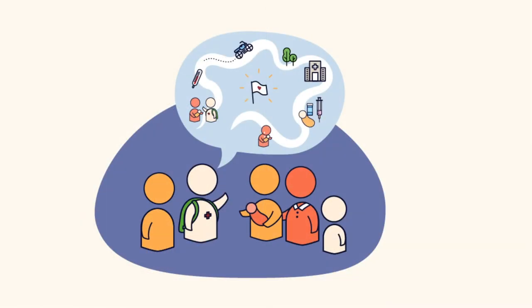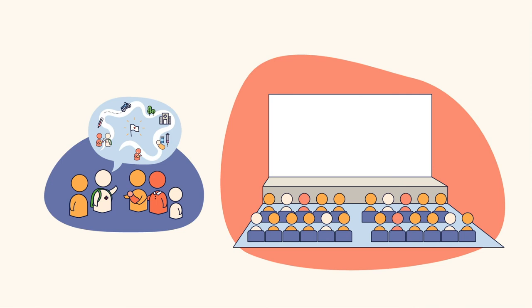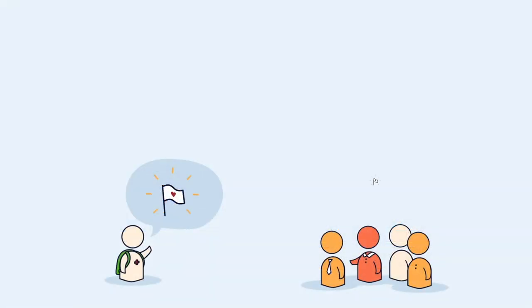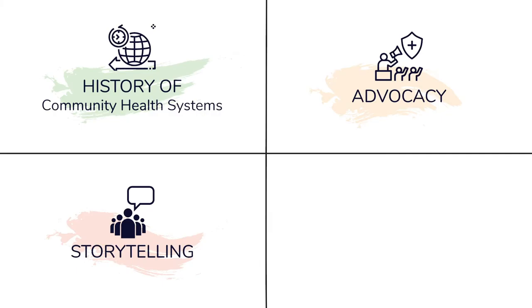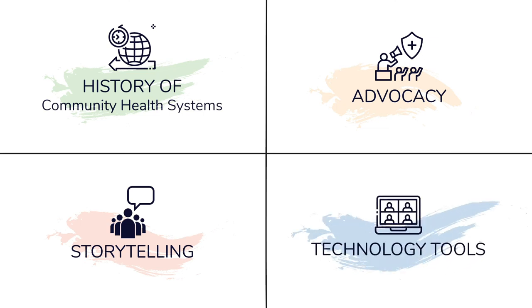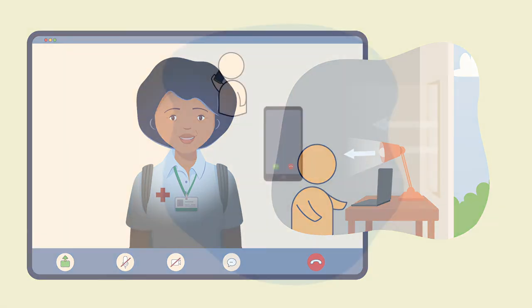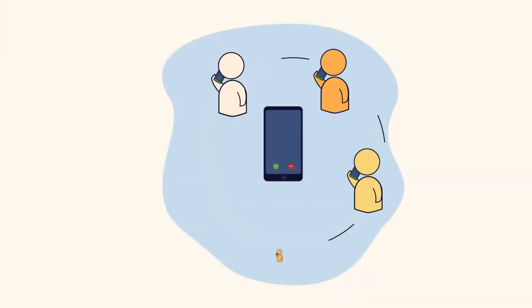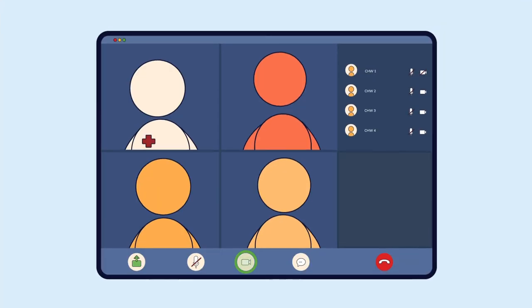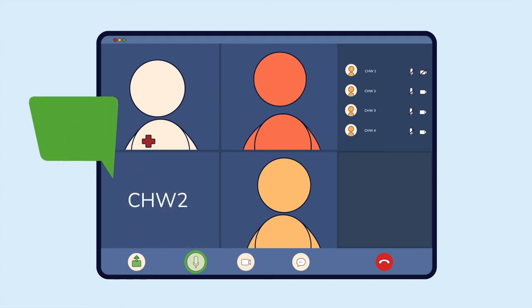Our third module is about storytelling. We'll talk about building confidence and finding your voice to tell your truth and connect with your audience. By telling stories, we can inspire others to act and support issues we care about. The fourth module is about technology tools and how you can participate in virtual events where community health is being discussed. You'll learn about virtual meetings, how to join them, and how to ensure your voice is heard.